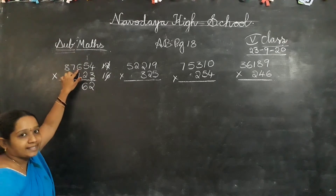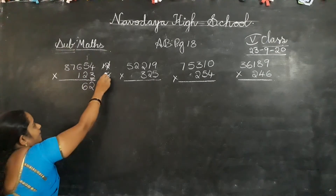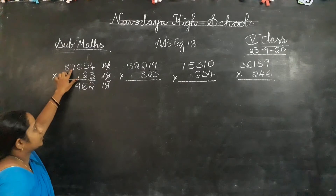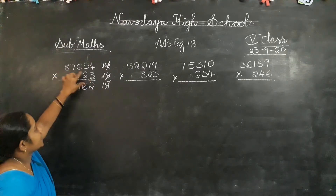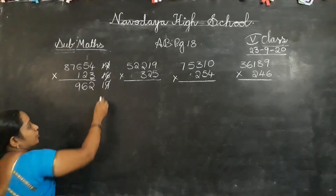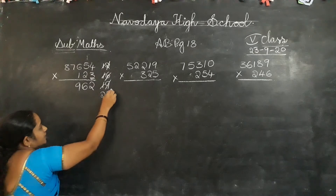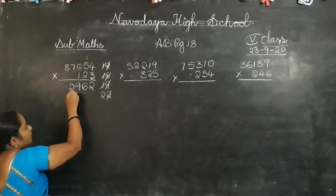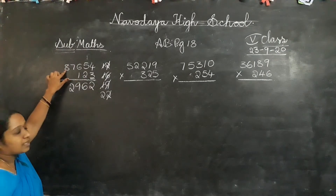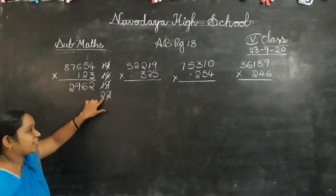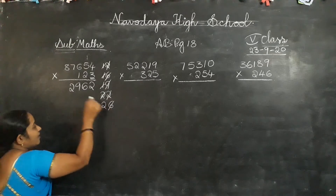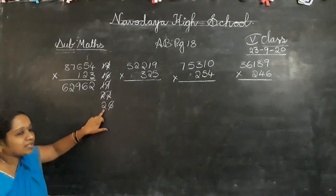3 sixes are 18. 18 plus 1? 19. Again, 9 is in the answer place, 1 is carry forward. 3 sevens are 21. 21 plus 1? 22. This is also a 2-digit number. 2 is in answer place, 2 is carry forward. 3 eights are 24. 24 plus 2? 26.